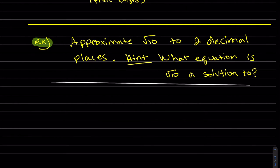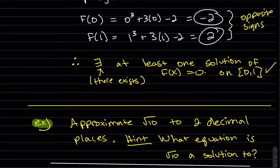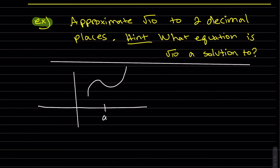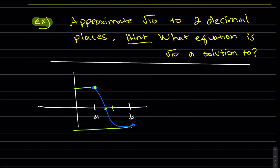So now we want to approximate the square root of 10 to two decimal places. Even though the Intermediate Value Theorem only tells us the existence of a zero, it's possible to use the process several times to get closer and closer to it. If I have a graph with points a and b, and we can see there's a zero, what we can do — once we have opposite signs — is take the average of a and b. We'll find that value is negative and we have a new interval. We take the average again, and we see we're getting closer and closer by this process.